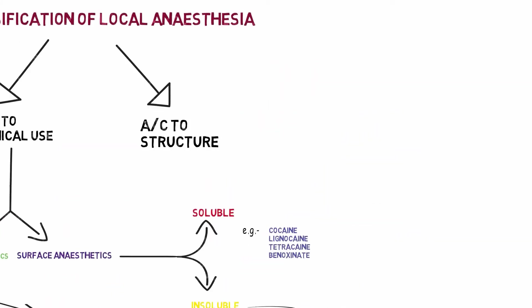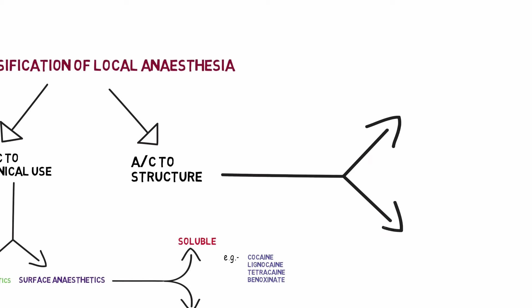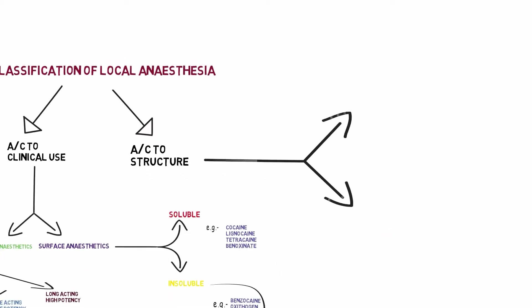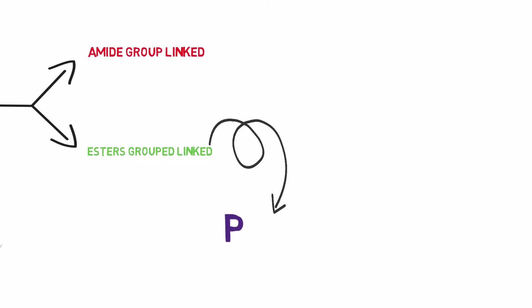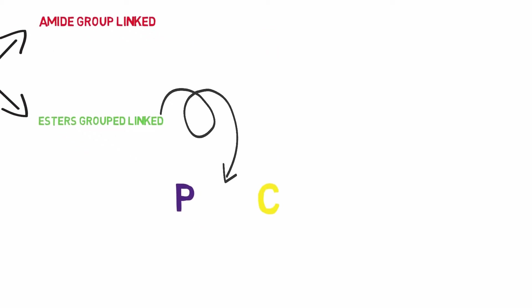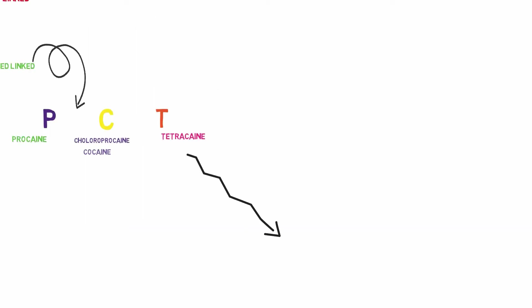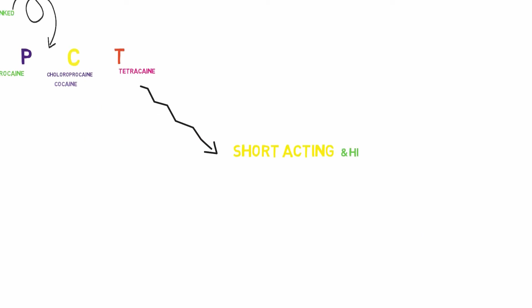We are going to classify the local anesthetics on the basis of structure. These are two types: amide group-linked local anesthetics and ester group-linked local anesthetics. The examples of these types of drugs are cocaine, procaine, chloroprocaine, and tetracaine. Ester-linked local anesthetics are usually short-acting and higher risk in allergics. An enzyme called pseudocholinesterase degrades the ester type of local anesthetics.